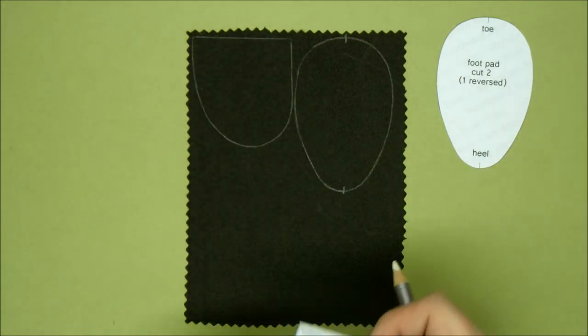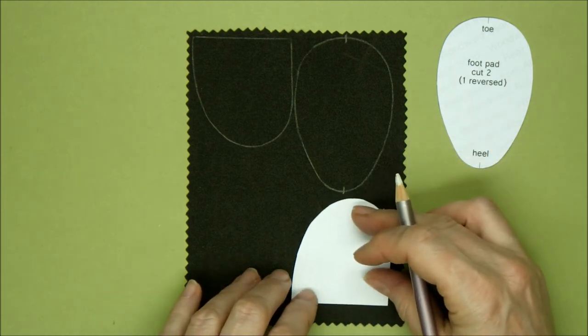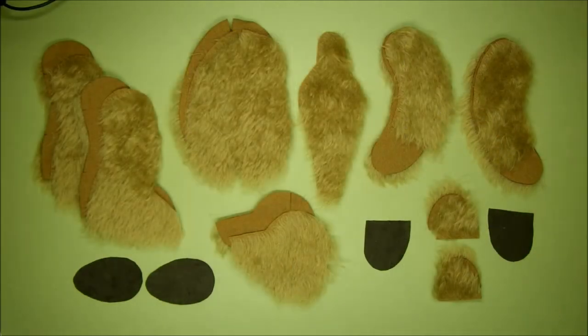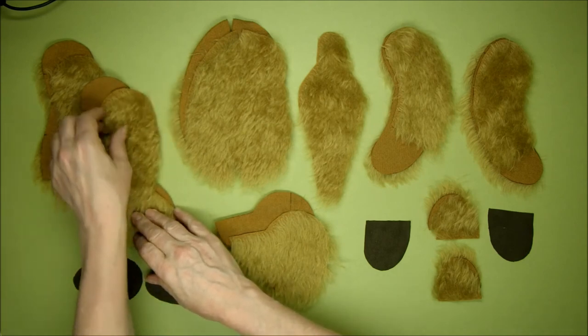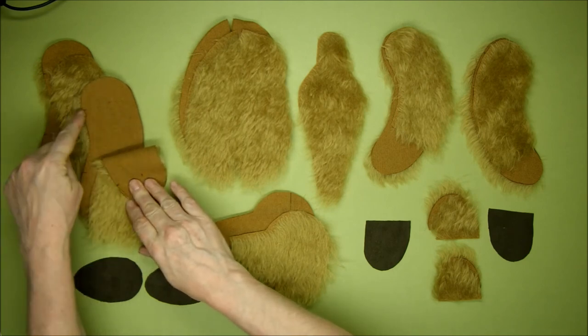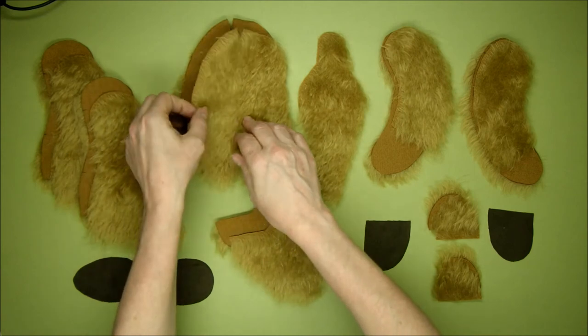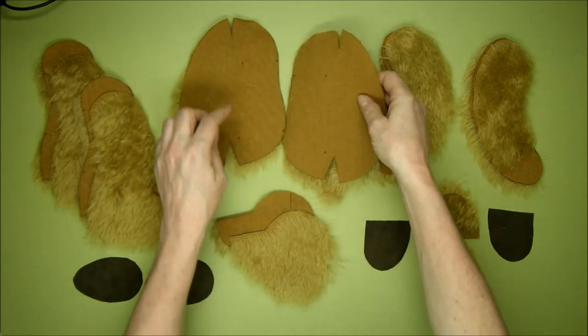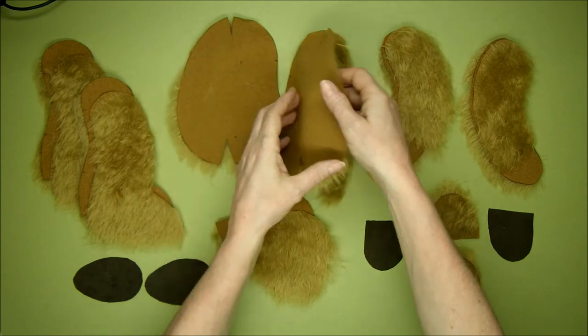Now we have all of our pattern pieces cut out. Four leg pieces with cotter pin markers on them, two body pieces with darts cut and with cotter pin markers and back opening.